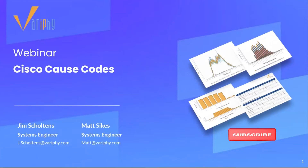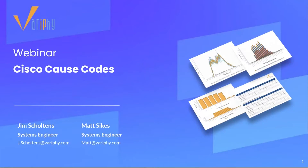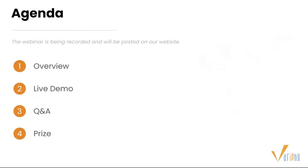Hello and welcome to our 30-minute webinar. My name is Jim Shelton and I'm joined by Matt Sykes, a couple of system engineers over here at Verify. For today's webinar we're going to talk about Cisco cause codes and how they can aid in determining call flows and termination rates. We'll start with a quick overview of our company, jump into a live demo, and pause for Q&A. After Q&A we will reward one lucky attendee with a $50 Amazon gift card.